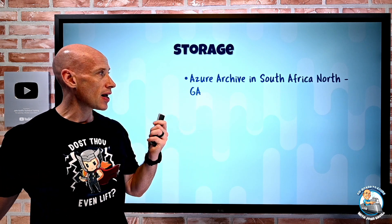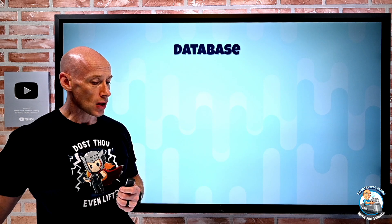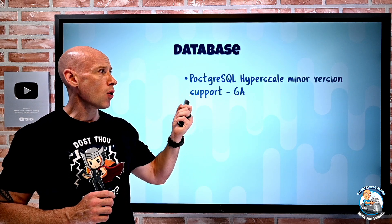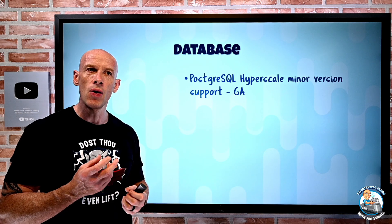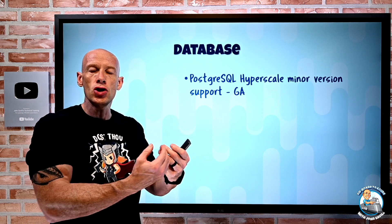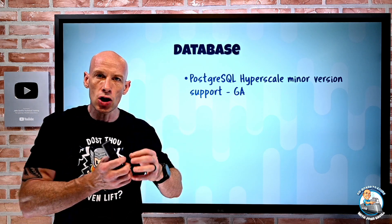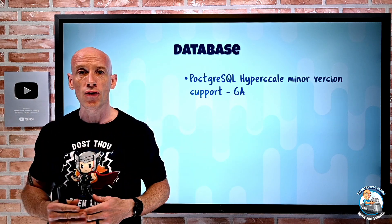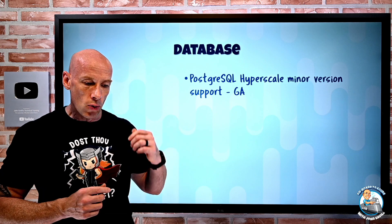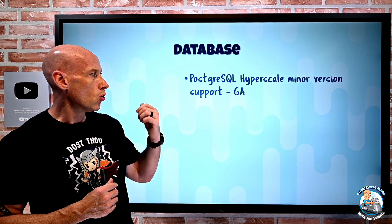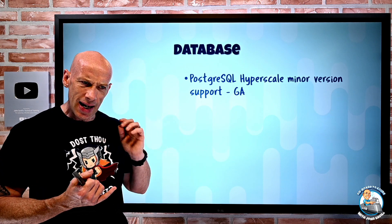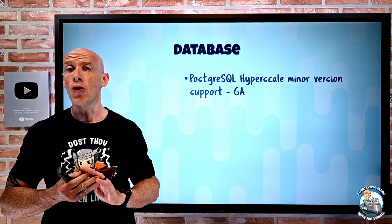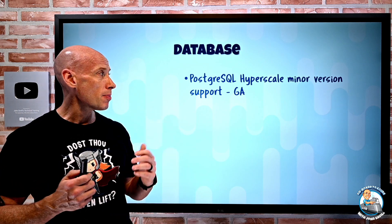On the database side, PostgreSQL Hyperscale — which uses the Citus extension to Postgres for huge scale and capacity by sharding data over distributed tables — now has additional minor versions supported: 11.16, 12.11, 13.7, and 14.3 are now available with Hyperscale.